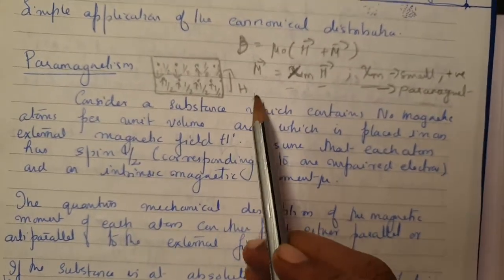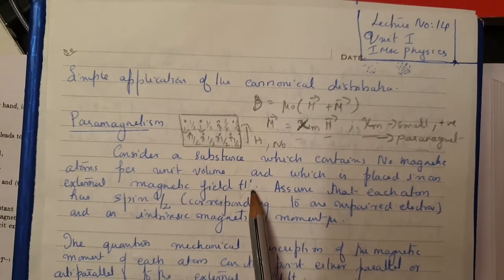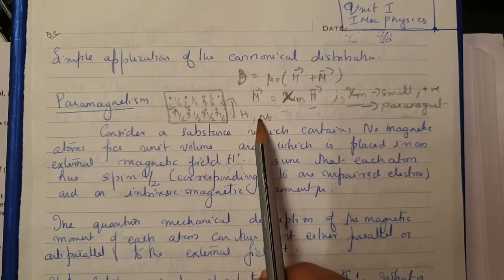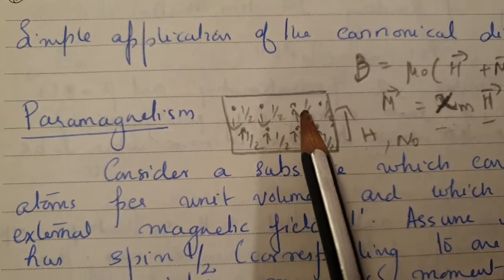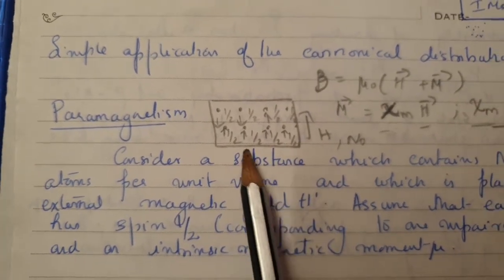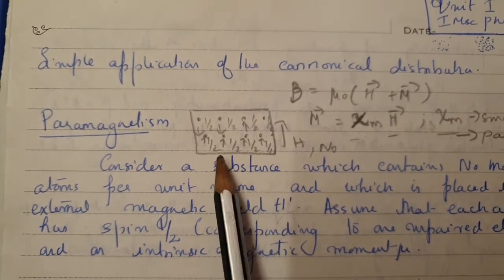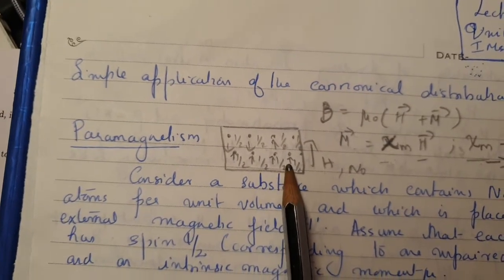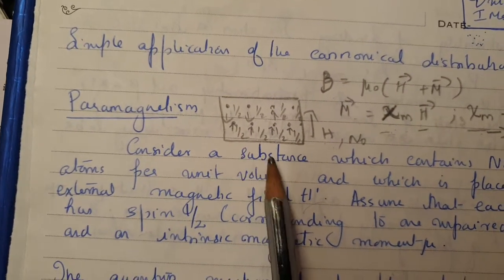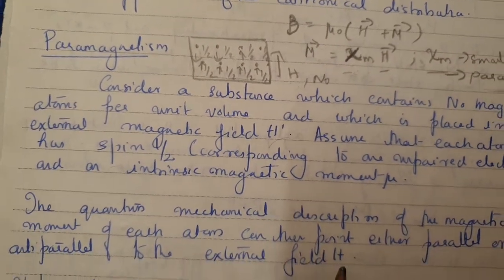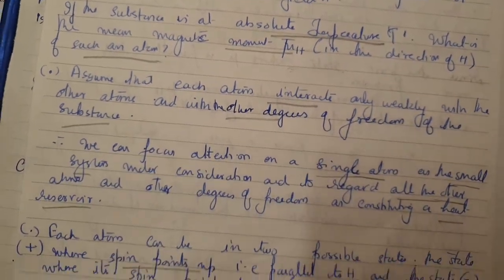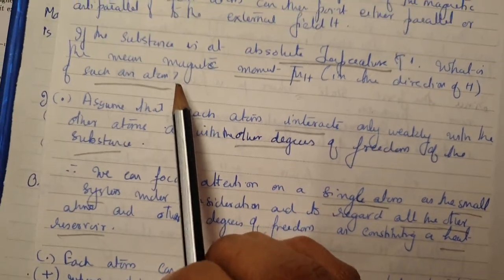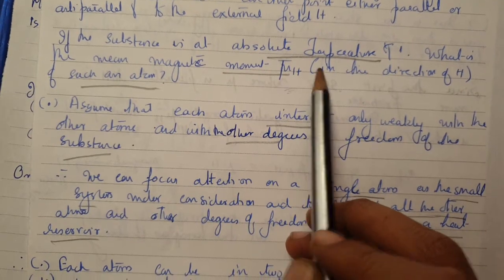We consider a substance where the total number of magnetic atoms per unit volume is n0. It is placed in an external magnetic field. Each atom has a spin of one-half, corresponding to any unpaired electron present. Majority will be pointing in one direction and some in the other direction. Depending on that, we have to derive χ_M.